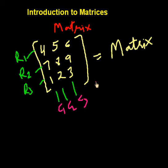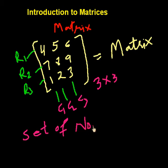This matrix is the order of three rows into three columns. So a matrix is just a set of numbers in two brackets.